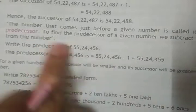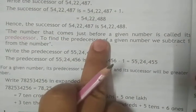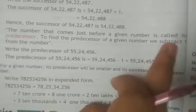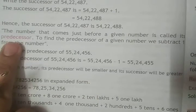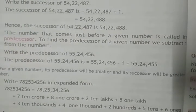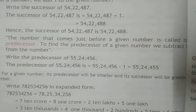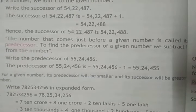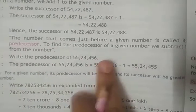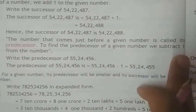Next is predecessor. The number that comes just before a given number is called predecessor. Like predecessor of 2 is 1, 10 is 9, 7 is 6. To find the predecessor of a given number, we subtract 1.